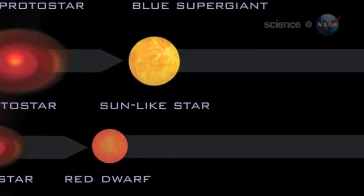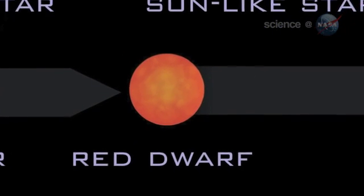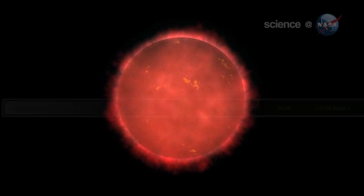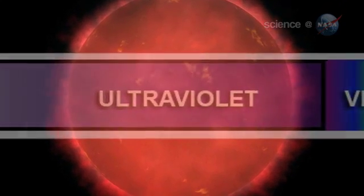"These M-class stars, also known as red dwarfs, are excellent targets for direct imaging of exoplanets. Young red dwarfs produce a telltale glow in the ultraviolet part of the electromagnetic spectrum that GALEX can sense."